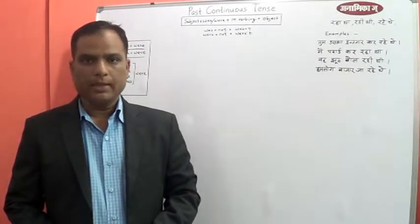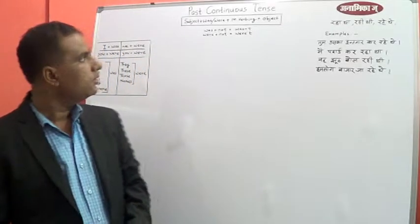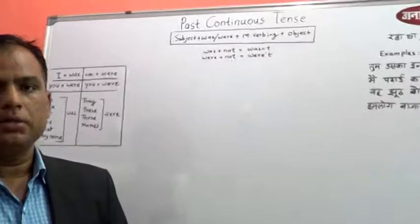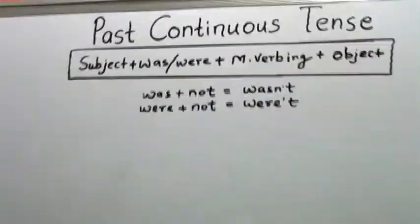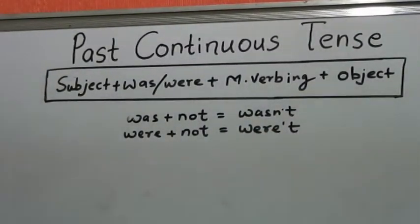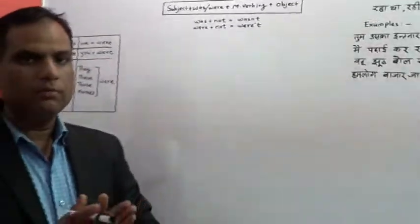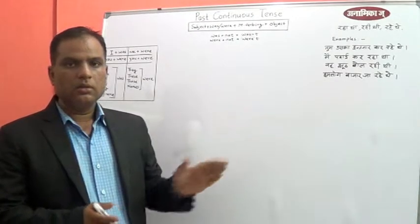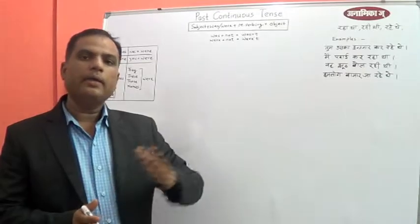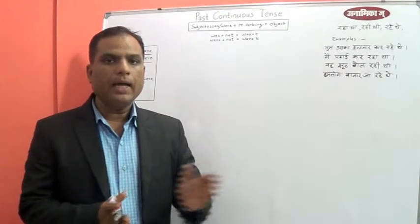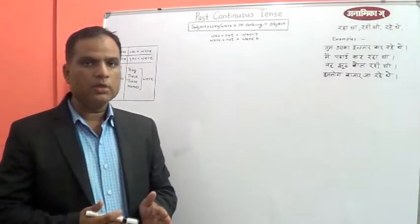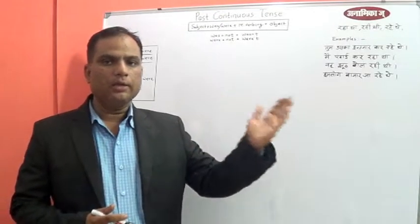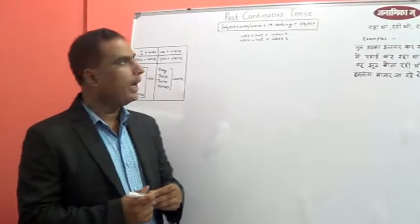Hi, this is Dilip from Anamika's Academy and today we are going to learn past continuous tense. As we had seen in present continuous, the work always remains in progress. In present continuous the work was going on at present, but here in past continuous tense this work in progress was at one particular point of time in the past. That is the only difference — present continuous me koi kaam chal raha hai, aur past continuous me koi bhi kaam bite huye samay mein chal raha tha.